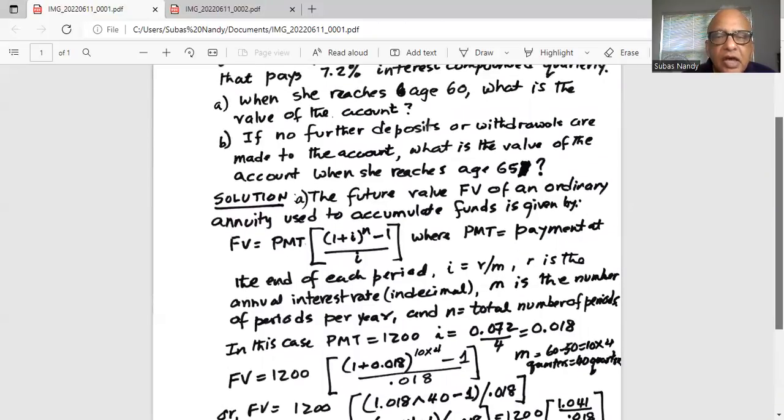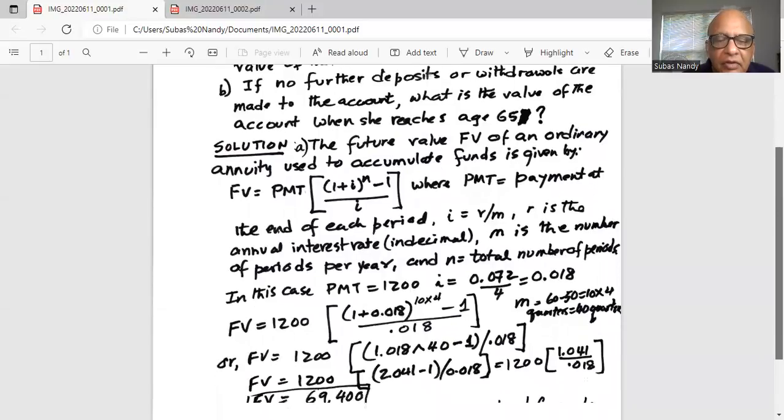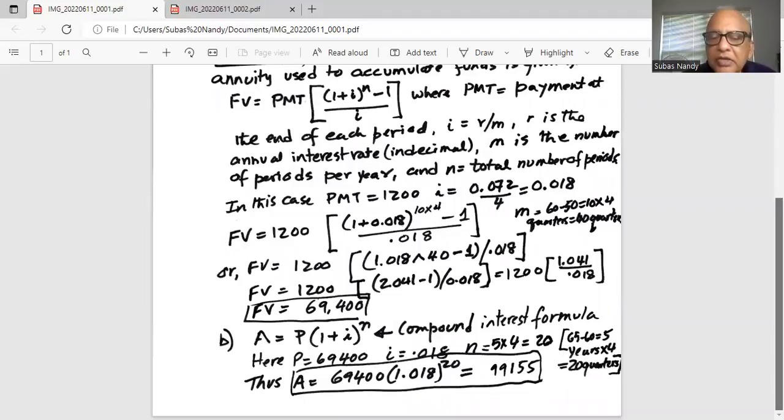Now the question is after age 60 if she makes no further deposits or withdrawals, what is the value of the account when she reaches age 65? So in that case we will use the value A, regular compound interest formula, A equals P times 1 plus I to the power of N. Now it's regular compound interest formula.